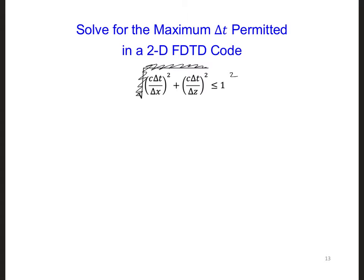And then we can multiply both sides by delta x squared and also delta z squared. Then if we pull out the common dt squared, we're going to get delta t squared c squared delta x squared